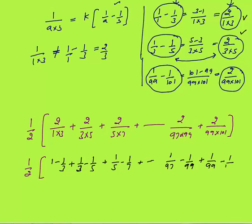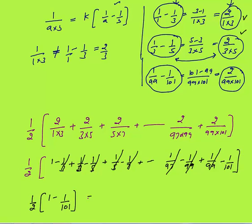Now we can easily solve: 1/3 cancels with +1/3, then 1/5 and +1/5 cancel, then 1/7, and so on — 1/97 cancels, 1/99 cancels. We are left with (1/2) × (1 − 1/101) = (1/2) × (100/101) = 50/101 as the final answer.